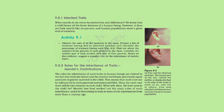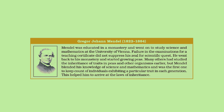For each trait, there will be two versions in each child. Mendel worked out the main rules of such inheritance. Gregor Johann Mendel was educated in a monastery and went on to study science and mathematics at the University of Vienna. Failure in his teaching certificate examinations did not suppress his zeal for scientific inquiry. He went back to his monastery and started growing peas. Mendel blended his knowledge of science and mathematics and was the first to keep count of individuals exhibiting a particular trait in each generation, which helped him arrive at the laws of inheritance.